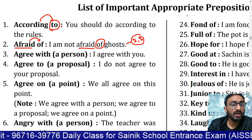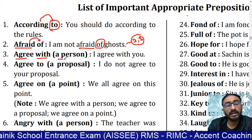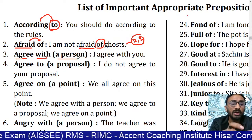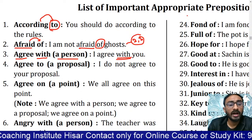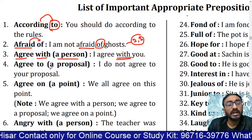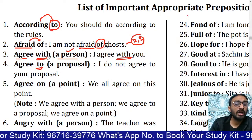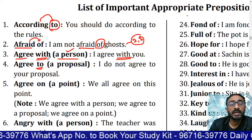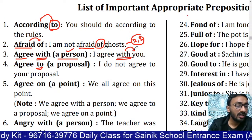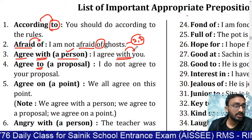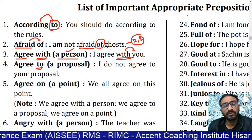'Agree' takes 'with' if a person is written — 'I agree with you,' 'I agree with Deepak,' 'I agree with Mahesh.' If 'agree' is followed by a person or pronoun, we write 'with.' 'I agree to a proposal' — if something (not a person) is written, we write 'to.'